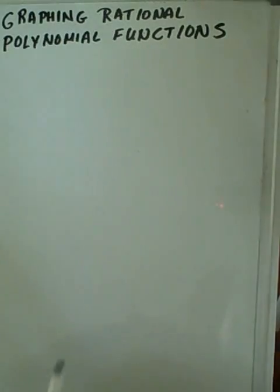Okay, this is part one for graphing rational polynomial functions. In order to graph polynomial functions we need to know a bunch of different information.